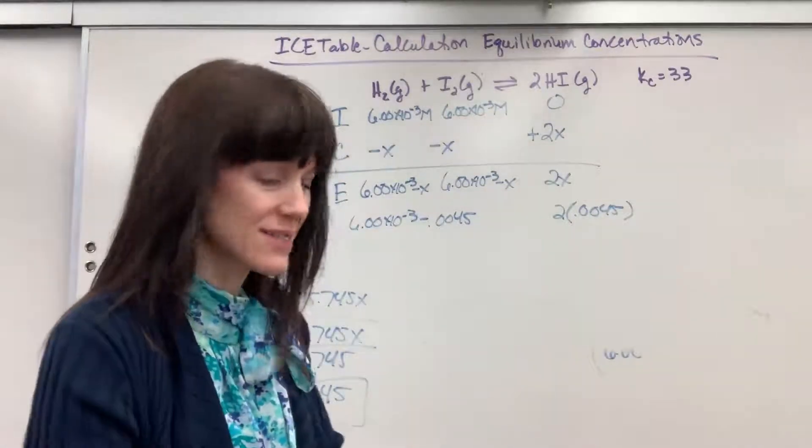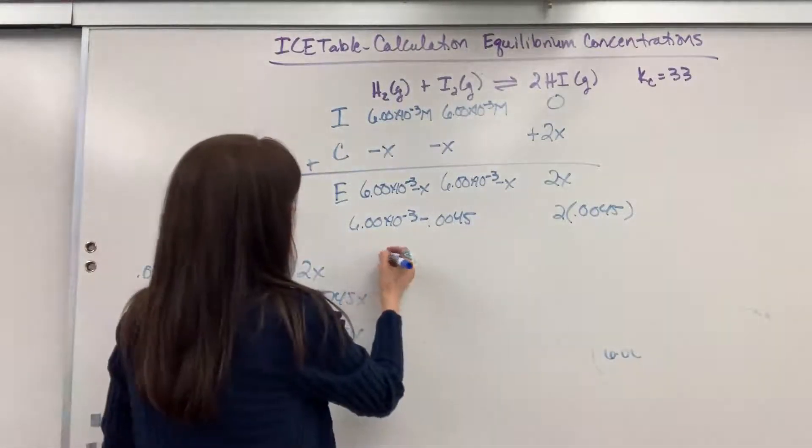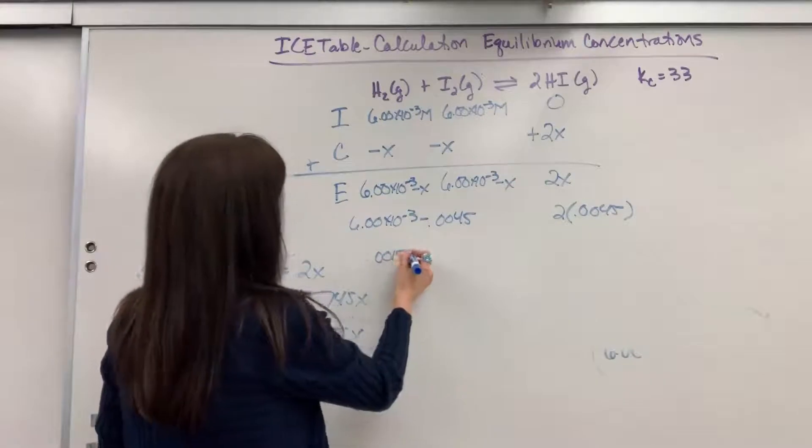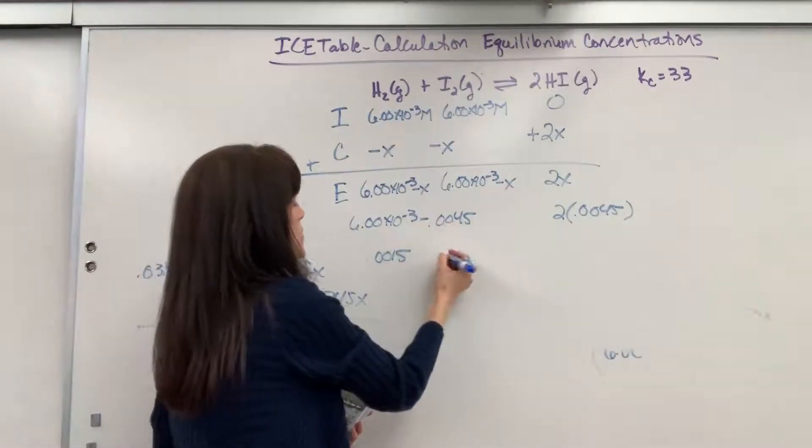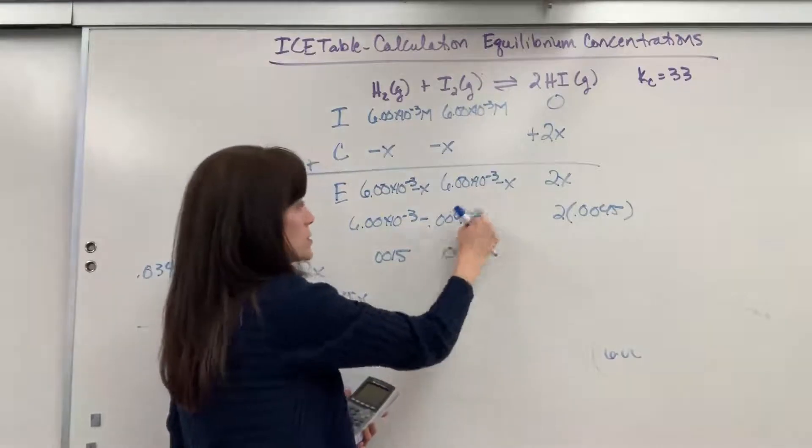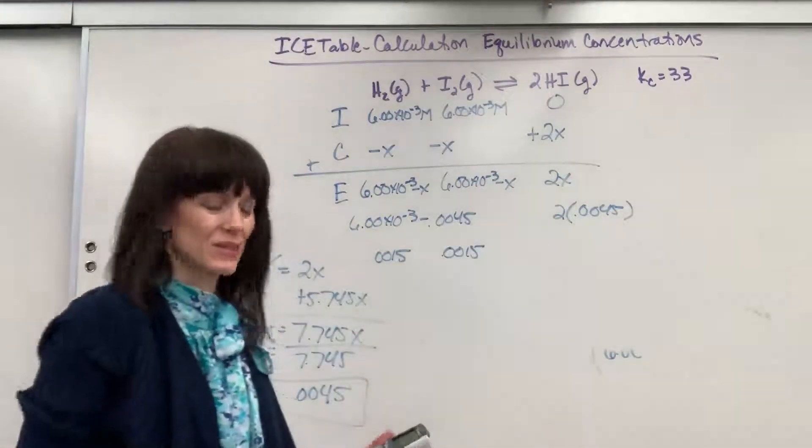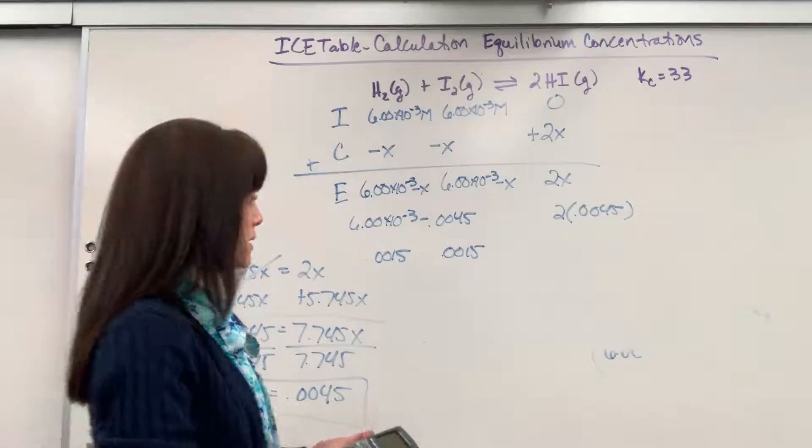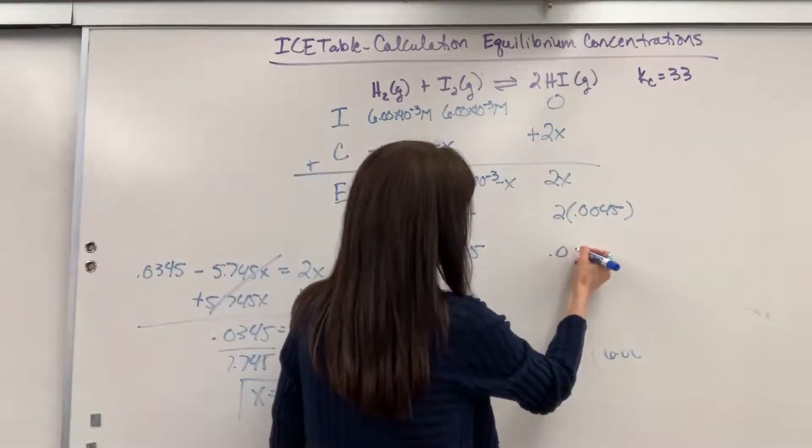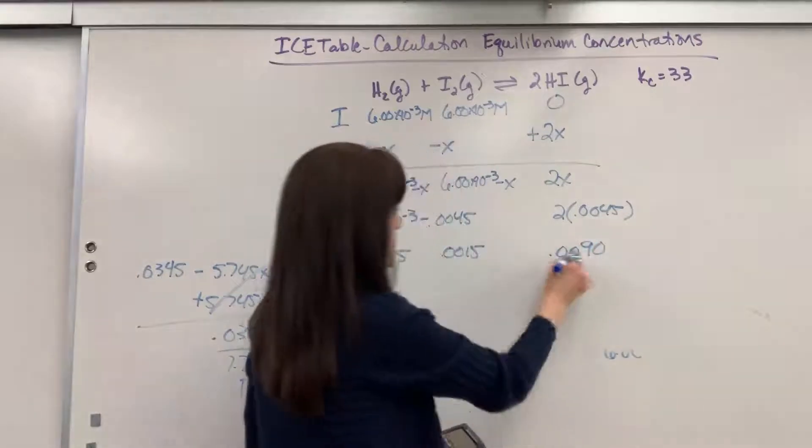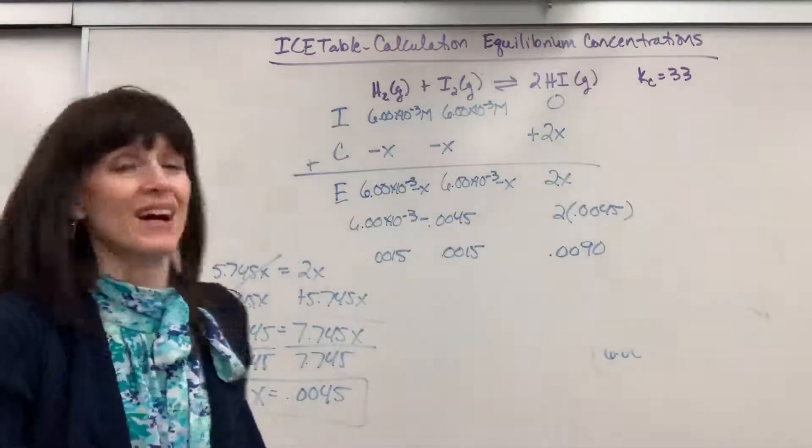So when we subtract this, we are going to get 0.0015. That's the concentration of hydrogen. It's the same thing for the iodine, 0.0015. Just plug in X there, get 0.0015. And then multiply this and we get 0.0090. That's going to be the concentration of the HI.